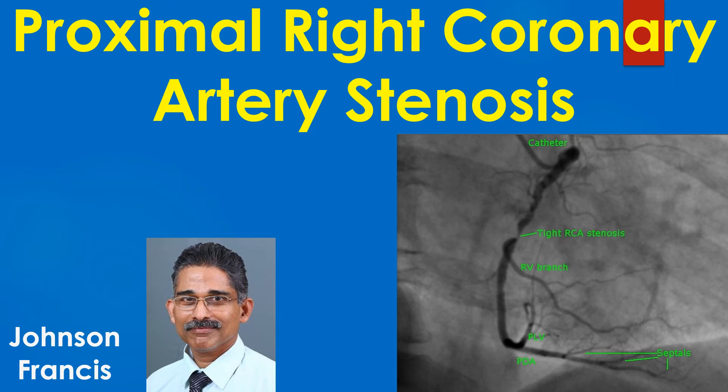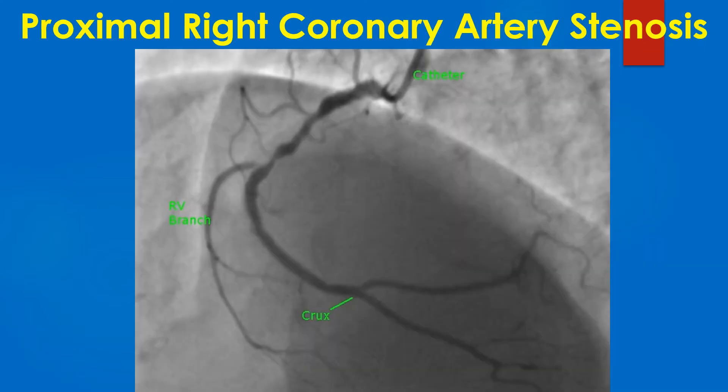Discussion on proximal right coronary artery stenosis on coronary angiogram. Right coronary angiogram in left anterior oblique cranial view shows proximal irregularities with narrowest segment near the origin of a right ventricular branch.